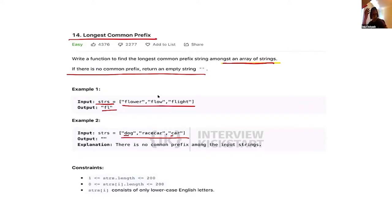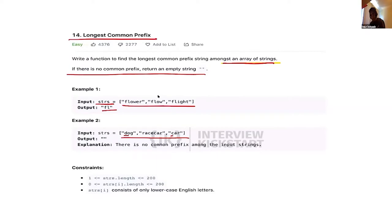The time needed for each comparison is proportional to the length of the word. If everyone uses the same decrease-and-conquer approach, the total work is proportional to the number of characters in the entire collection, since each person does work proportional to the length of their respective string. This is a good enough solution and can be done in place without a hash table.